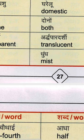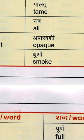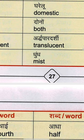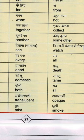अर्ध पारदर्शी — translucent — T-R-A-N-S-L-U-C-E-N-T. अपारदर्शी — opaque — O-P-A-Q-U-E. कोहरा — fog — F-O-G — जैसे सर्दियों में धुंध जैसा दिखता है। धुंध — mist — M-I-S-T. धुआँ — smoke — S-M-O-K-E. इस तरह आपके 25 words हुए। इनको दो बार अच्छे से read करना है और learn करना है।